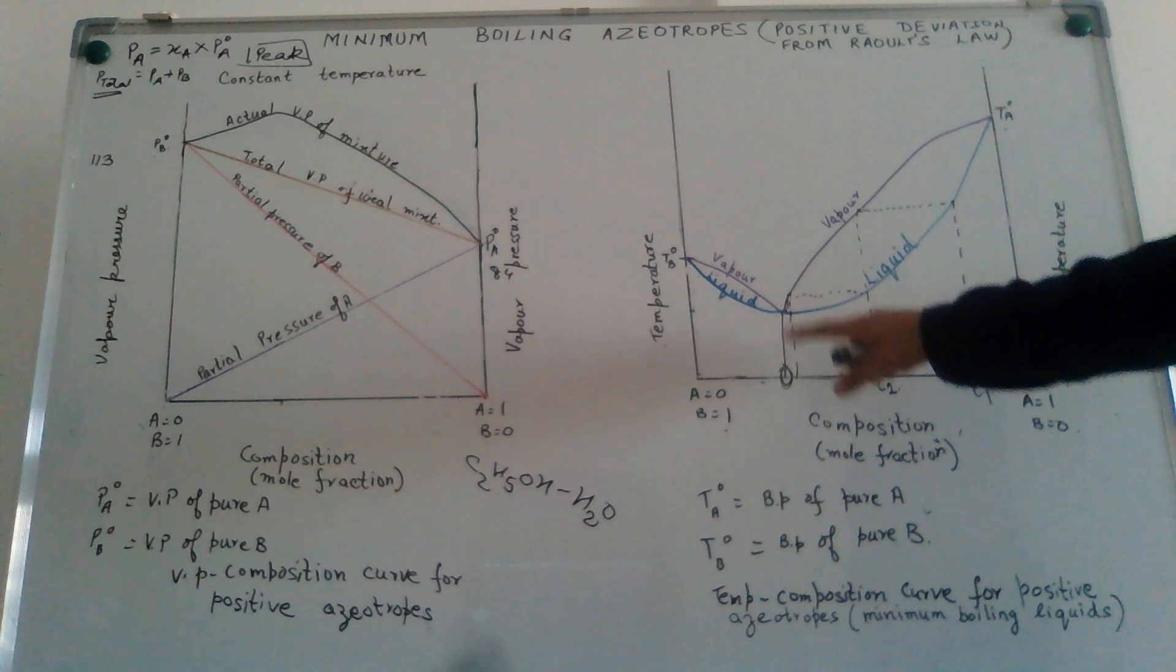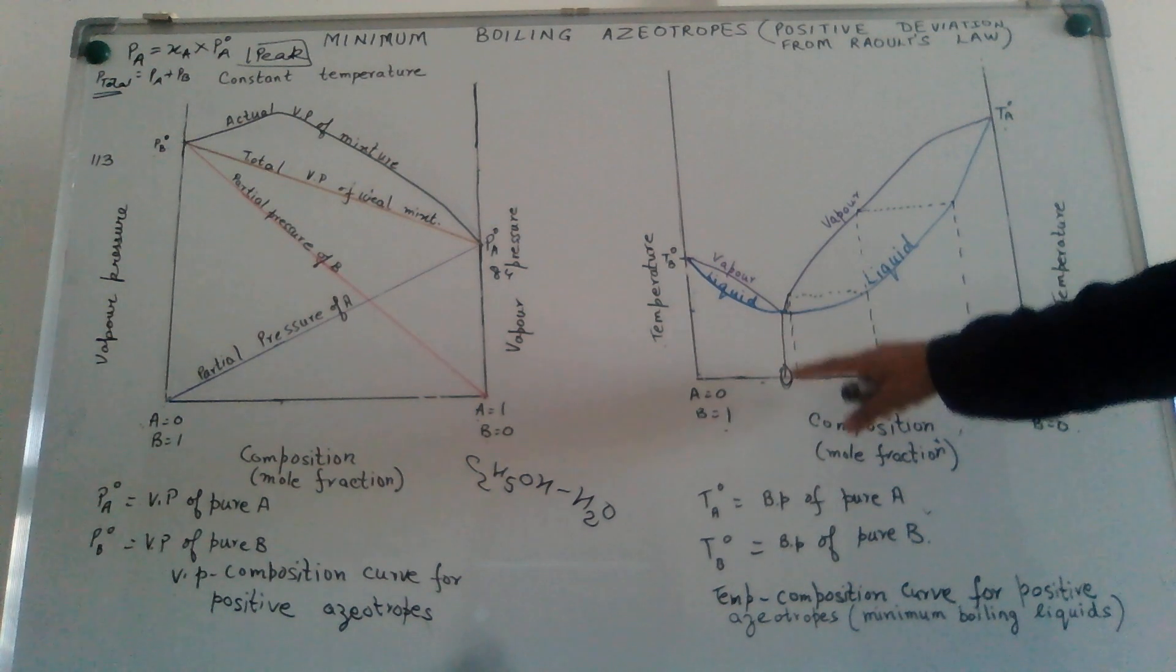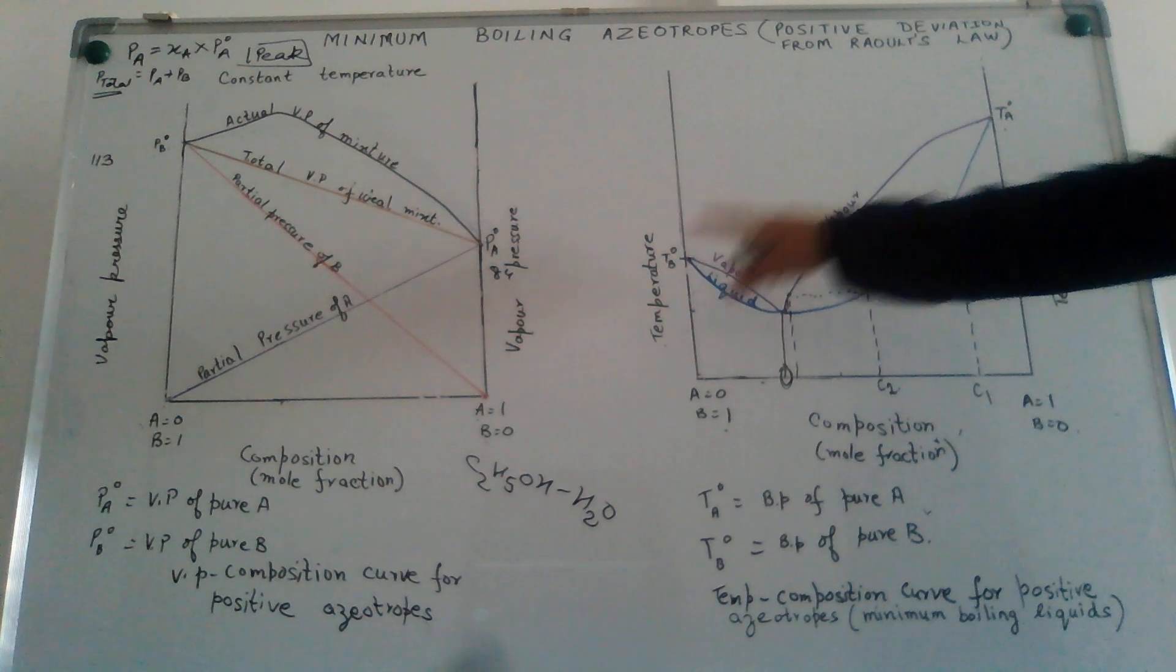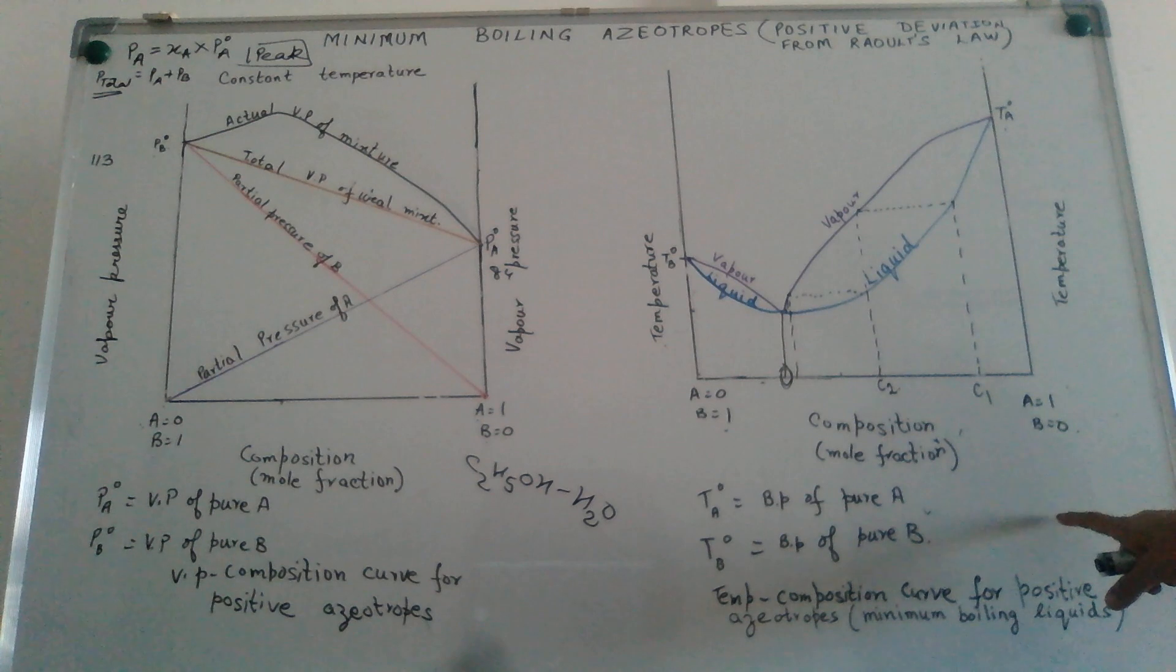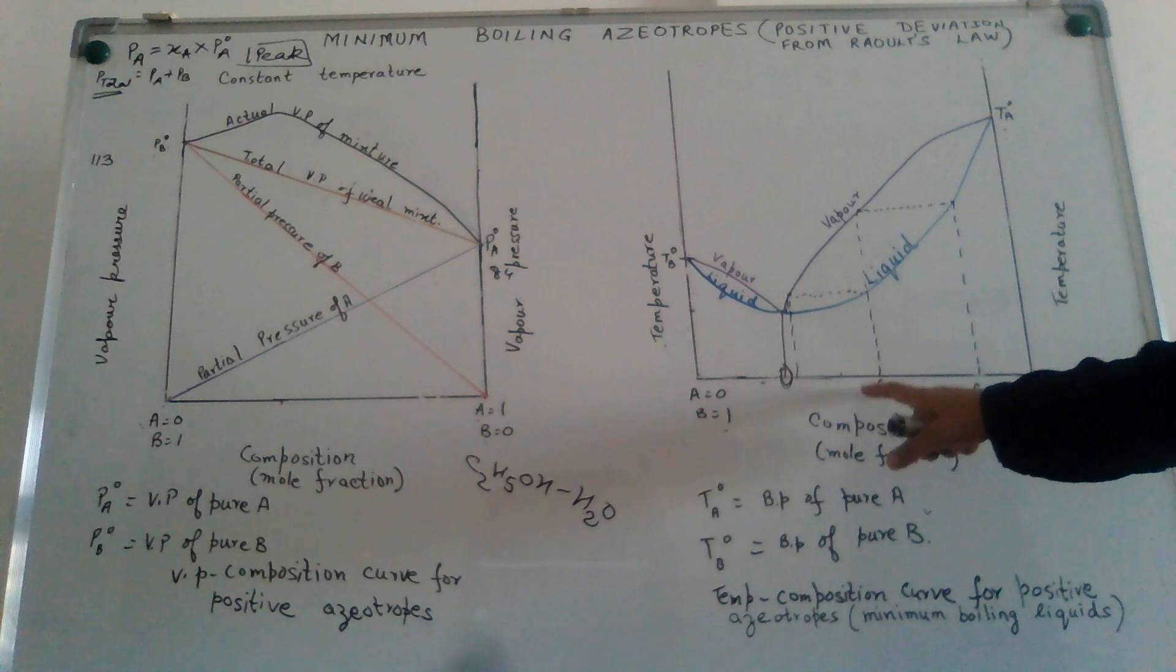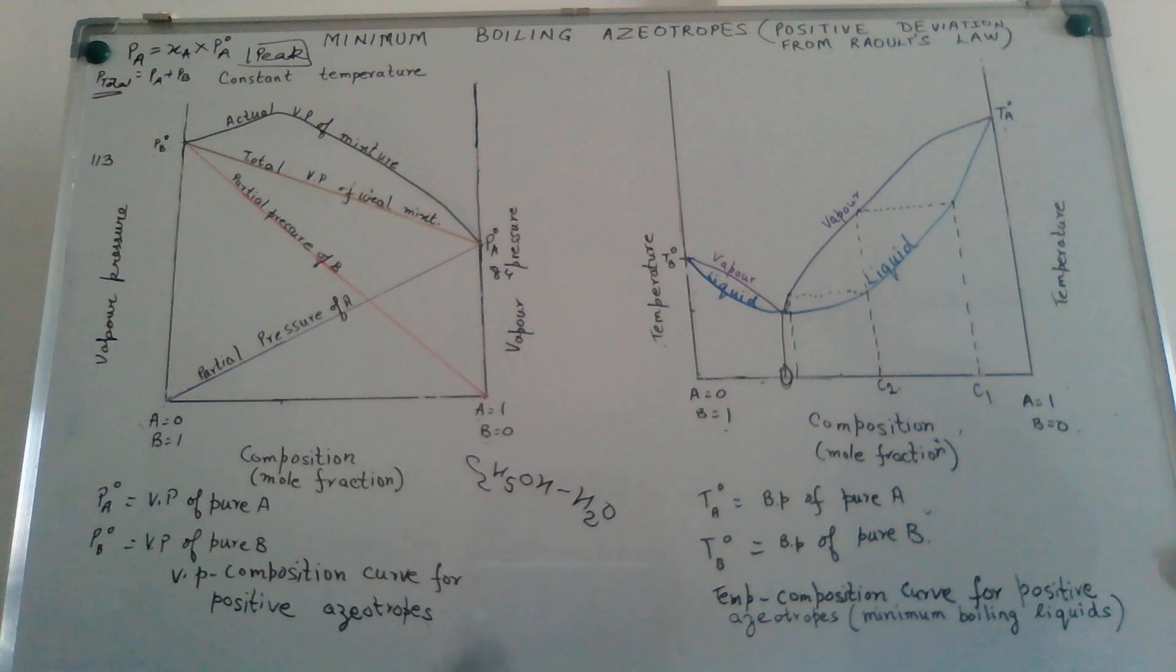The temperature or the boiling point of this mixture becomes constant and becomes a minimum. That means it is lower than the boiling point of each of the individual components. That is why these graphs are also called as minimum boiling point curves. And such liquids form what we call as minimum boiling liquids or minimum boiling azeotropes. What are azeotropes? Liquid mixtures which have a constant boiling point, which have the same boiling point, are called as azeotropes.